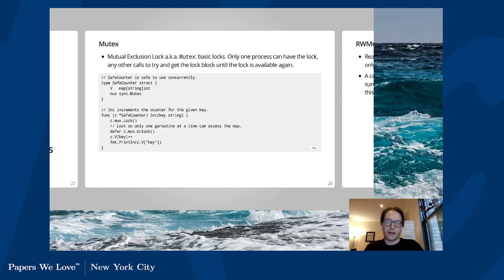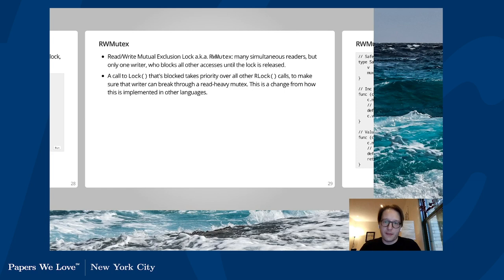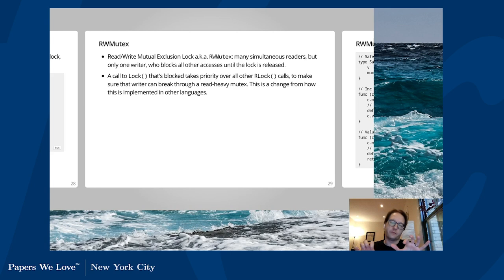The RWMutex is a reader-writer mutex — readers can have different priority. A read lock can be held many times, but a write lock blocks all other accesses until released. However, in Go, as opposed to C and other implementations, a call to lock that's blocked takes priority over any other read locks, to make sure that a writer can break through a read-heavy mutex. This is not how it is in other places — in other implementations, if there are six read locks and one write lock waiting, whoever happens to get it next gets it next. But in Go, the write lock will always beat the other read locks, which can apparently lead to occasional bugs for people unaware of that difference.